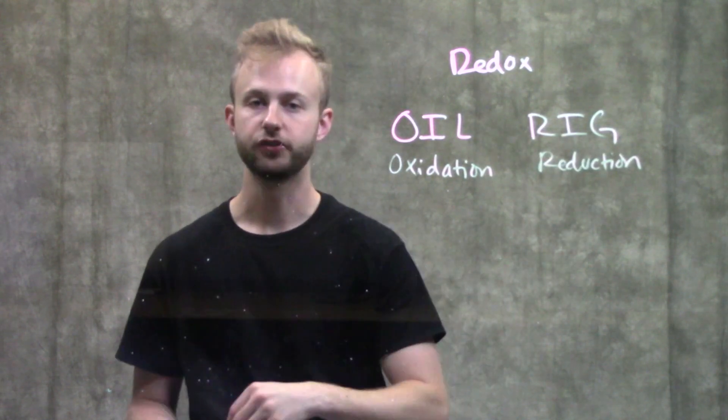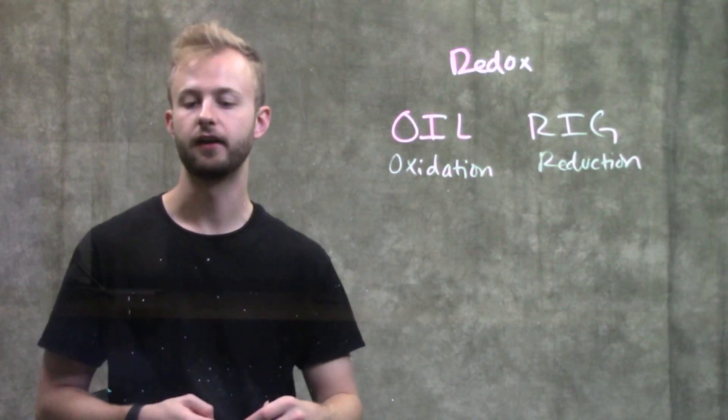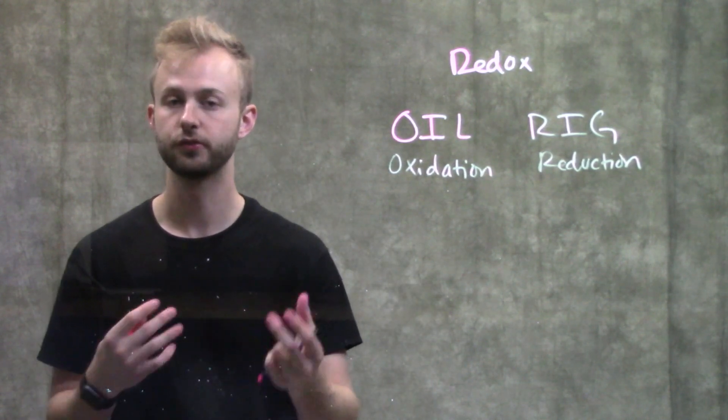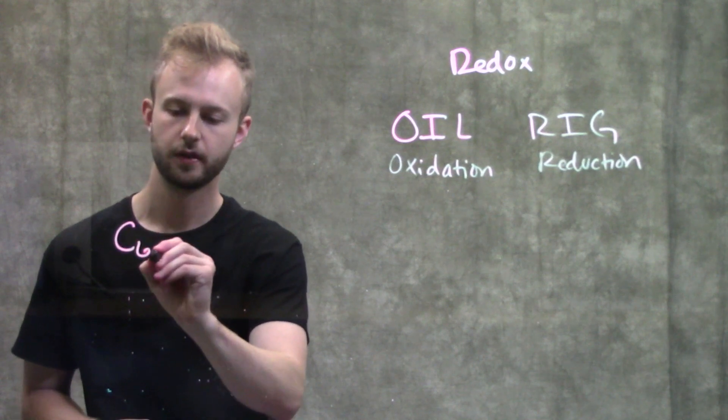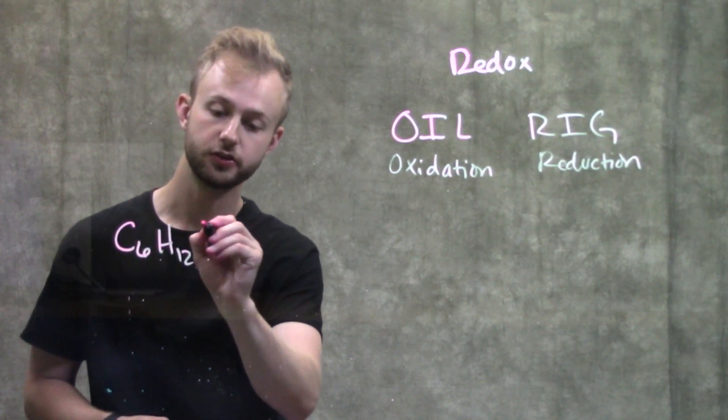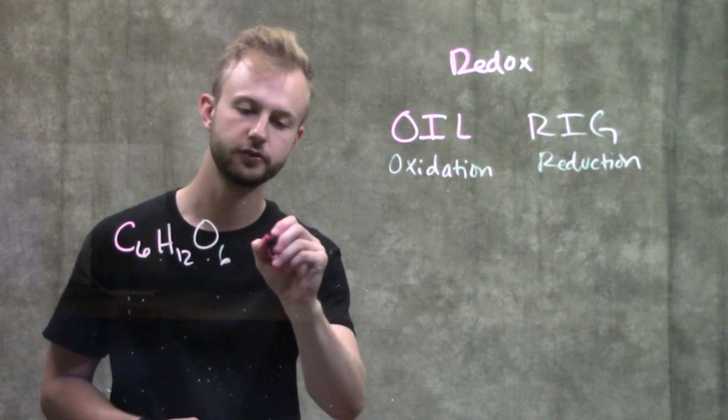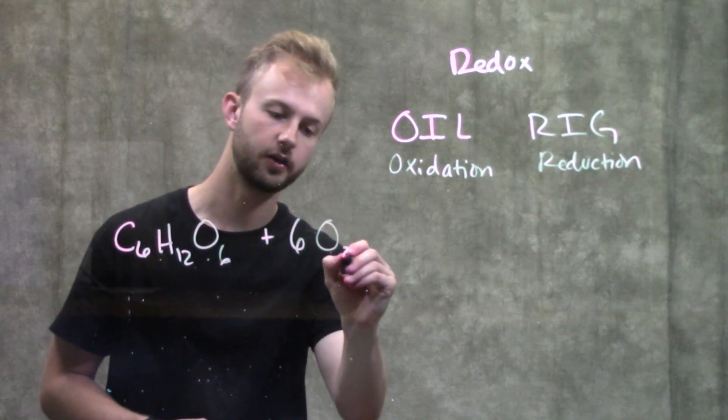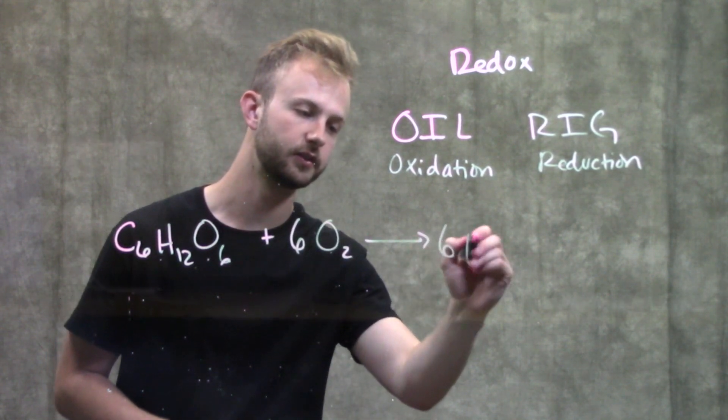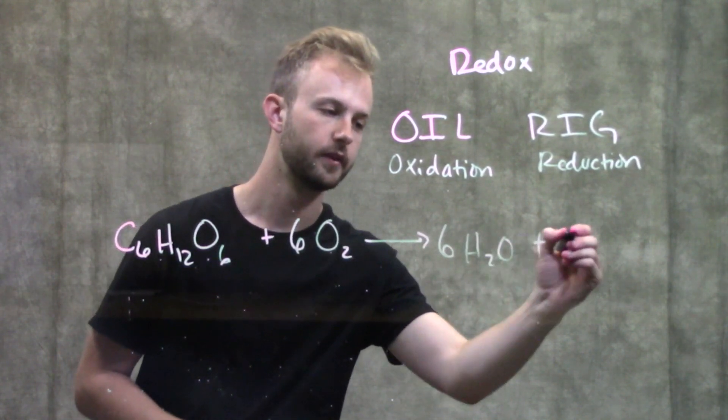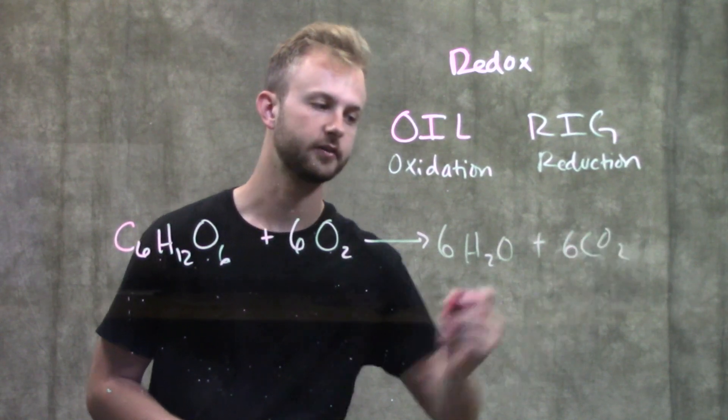To illustrate this principle, we'll look at the general formula for cellular respiration. It's C6H12O6, which is glucose, plus 6O2, gives us 6H2O and 6CO2.